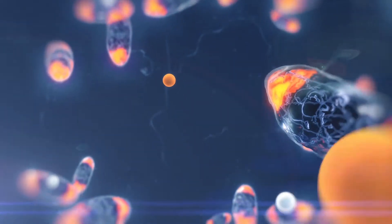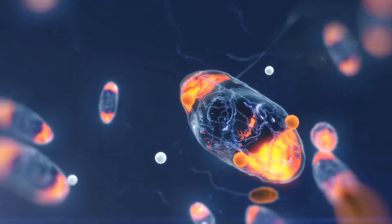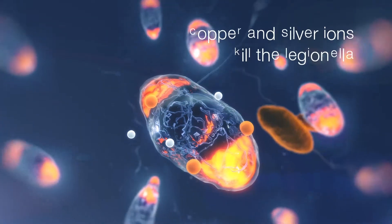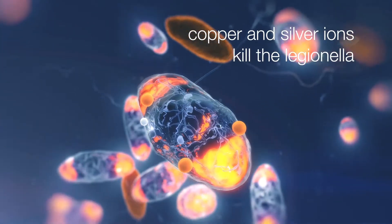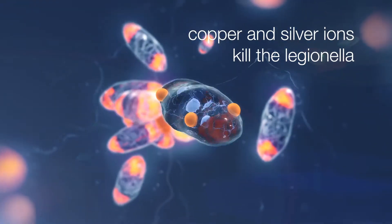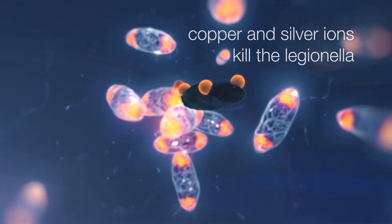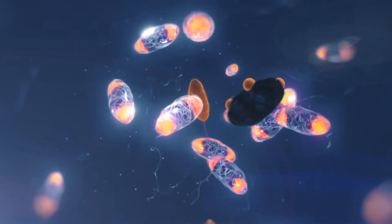The positive ions are attracted to the negative side of the pathogen. Once attracted, the silver weakens the cell wall. The ions enter the cell, killing the cell by denying all life support to it.